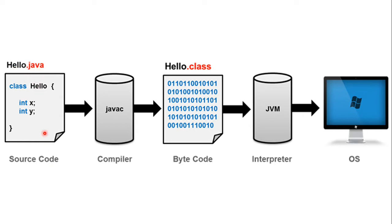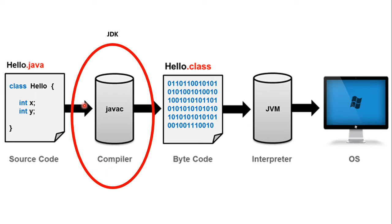Then we will compile the source code. The JDK — the Java Development Kit — is used to compile the source code into bytecode.